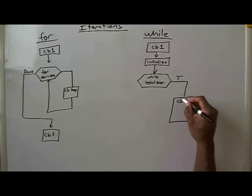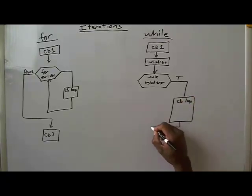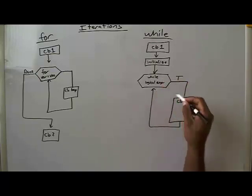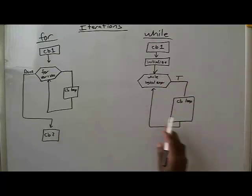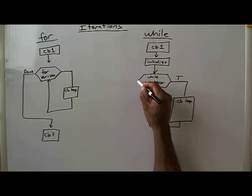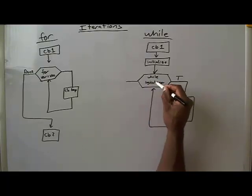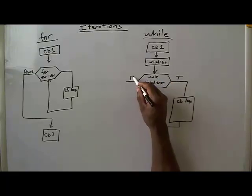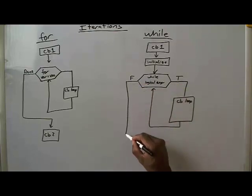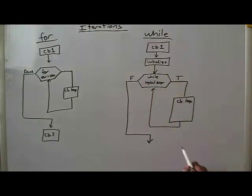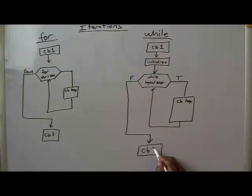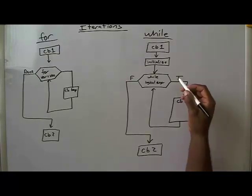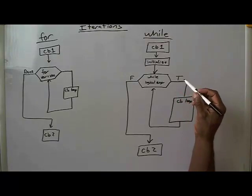You execute the code inside the loop and come back around, just like you did with the for loop — you can see the similarities. When that logical expression evaluates to false, you exit the loop and then execute whatever code block you have further down in your script or function.